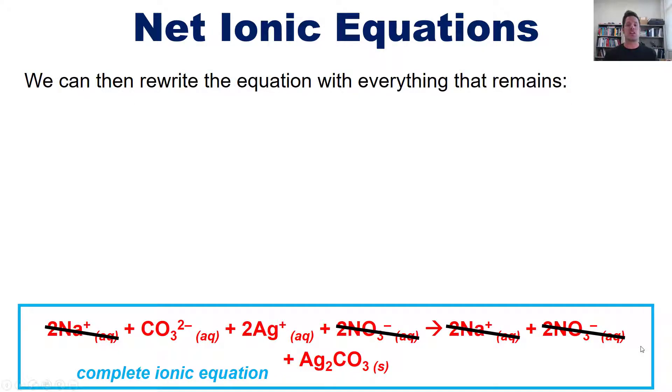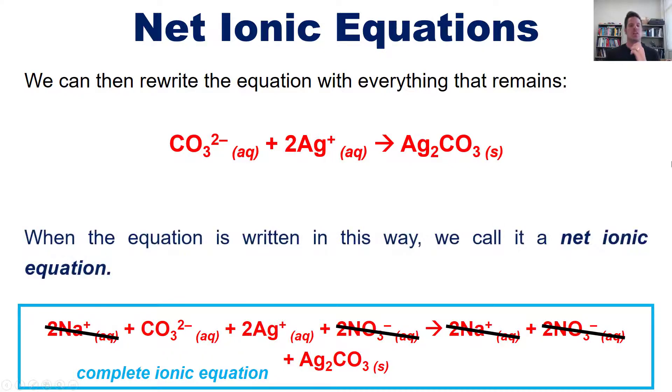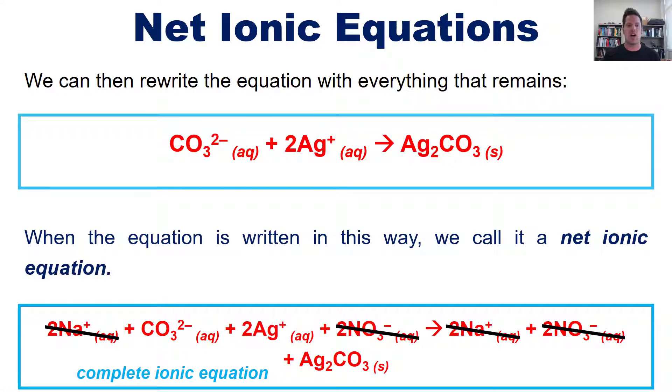So, we can then rewrite the equation with everything that's left over, which will look, in this case, like this. Carbonate combining with silver to give us solid silver carbonate. So, when the equation is written in this way, we call it the net ionic equation, because we have what is left over, the net.